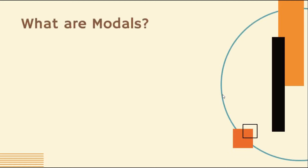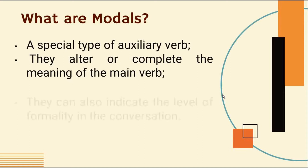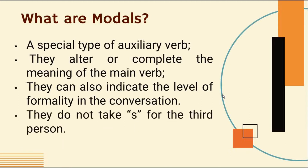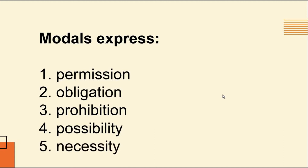The verbs are used to express a statement of fact, or what is considered to be a fact, or what is intended or expected to become fact. But what are modals? These are a special type of auxiliary verb that alter or complete the meaning of the main verb. They can also indicate the level of formality in the conversation and do not take -s for the third person. Also, modals are used to state non-factual concepts like possibility, permission, prohibition, necessity, and obligation. They have meanings of their own and are also used to form negatives.